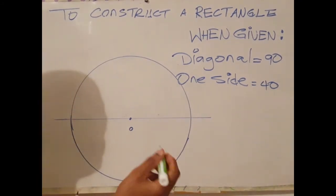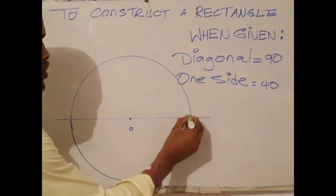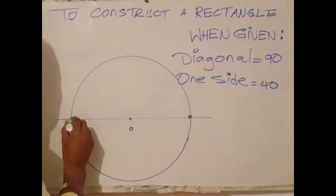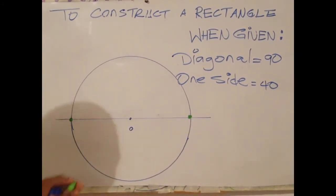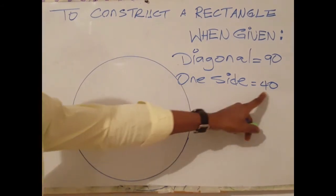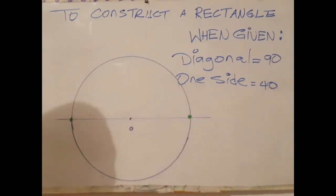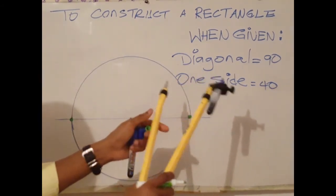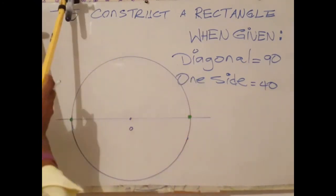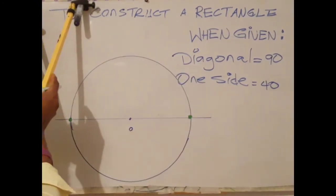Now that you have drawn a circle, we will be using these two points as center. One side is 40 millimeters, so next step, readjust your compass to 40 millimeters.